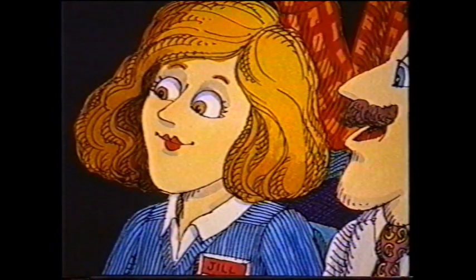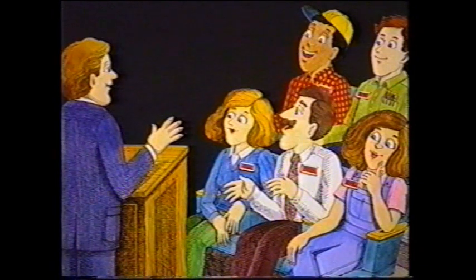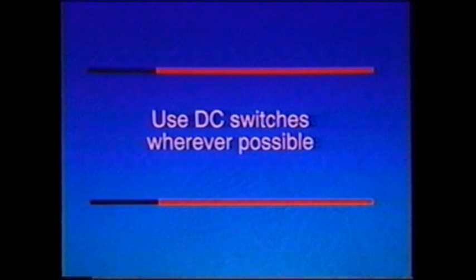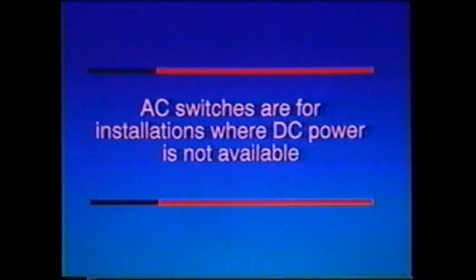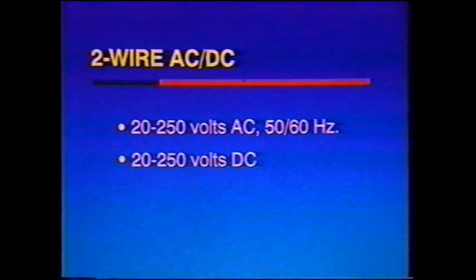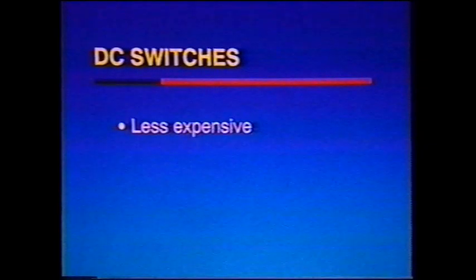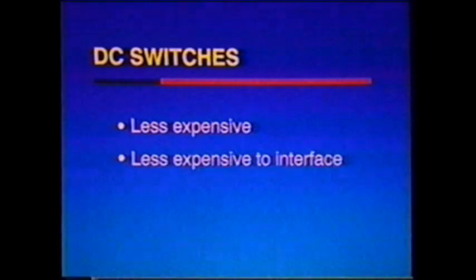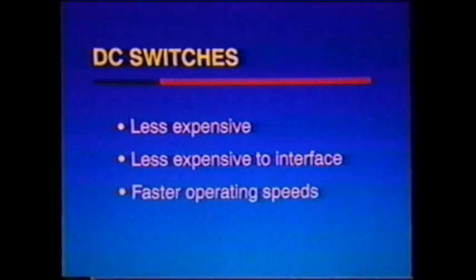If DC switches have all these advantages, why use an AC unit? If you have a choice, you normally will want to choose DC switches. But many installations don't have DC available, and that's where AC switches come in. A lot of plants have a mix of AC and DC applications — here you may want to consider AC-DC proximity switches. These units will typically operate from any power supply from 20 to 250 volts AC and 20 to 250 volts DC. To summarize, when you have a choice between AC and DC, DC switches are less expensive, less expensive to interface, and give you faster operating speeds.